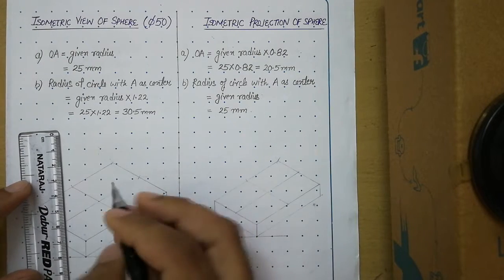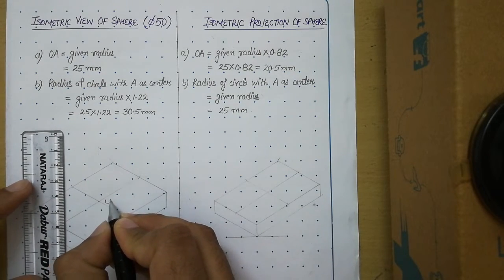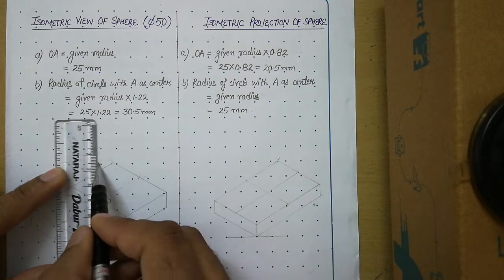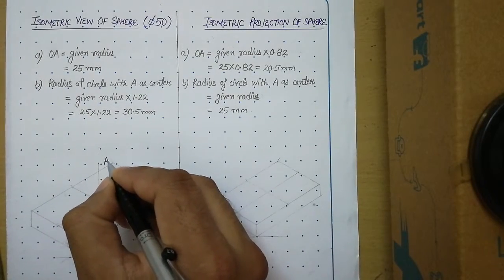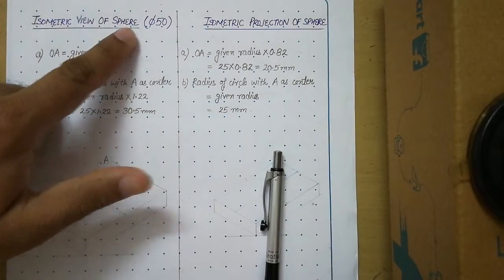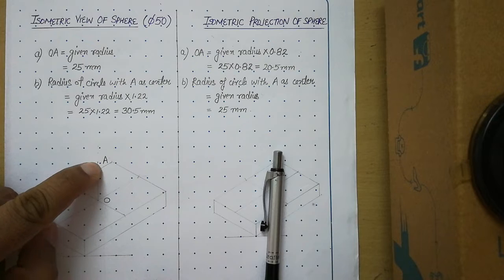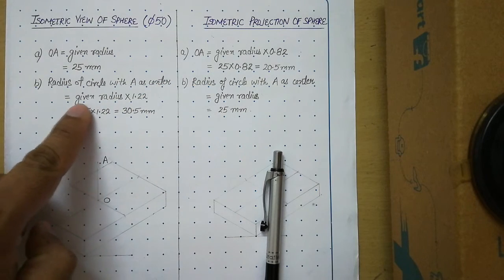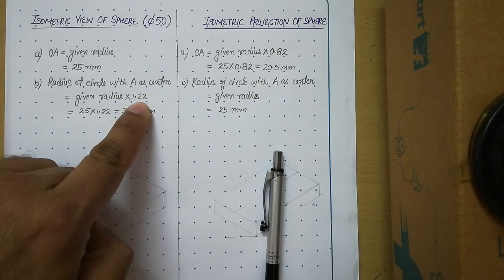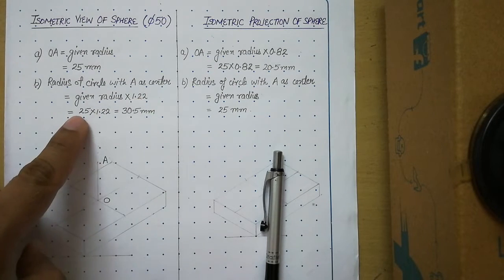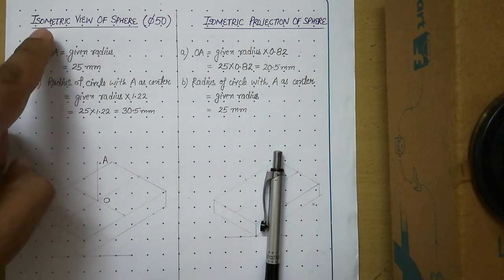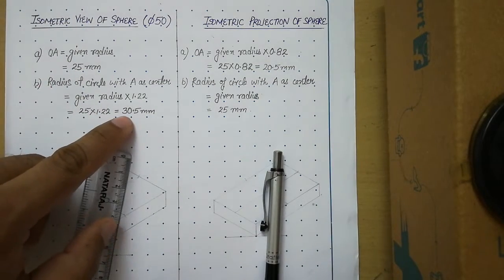Let us name the resting point of the sphere as O. From this point, we will draw a thin continuous line of 25 mm, equal to the given radius, and call this point A. The next step in drawing the isometric view of the sphere: take A as center and draw one circle. The radius of the circle with A as center will be equal to the given radius multiplied by 1.22 — that is the factor. After multiplying 25 by 1.22, we get a value of 30.5 mm. So open the compass to 30.5 mm.